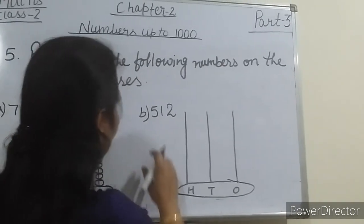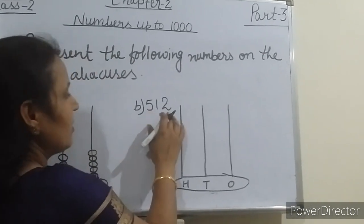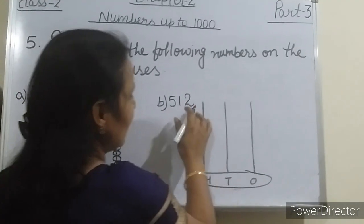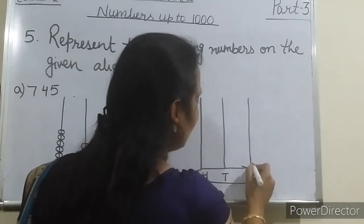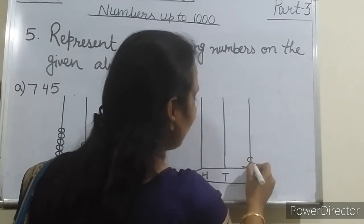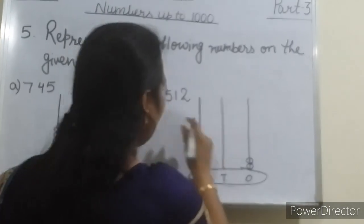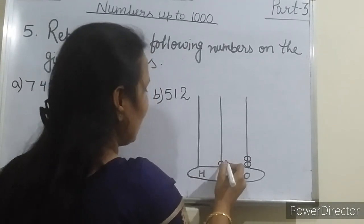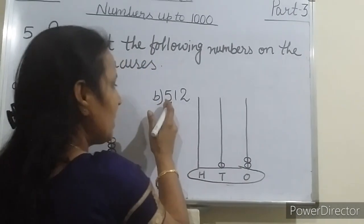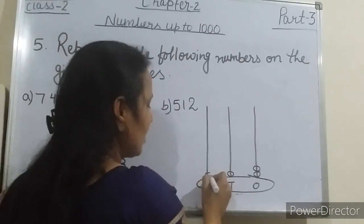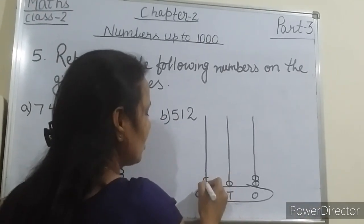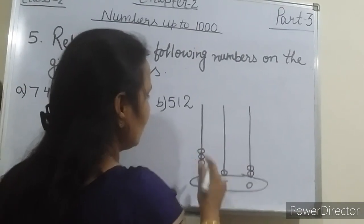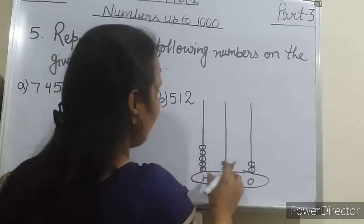Come to the next one, students. 512 — start again like that only. At the ones place, 2 beads we have to draw. And here at the tens place, 1. And at the hundreds place, 5 beads: 1, 2, 3, 4, 5. So this is 512.